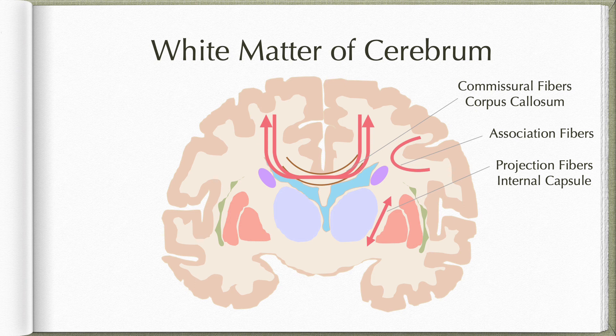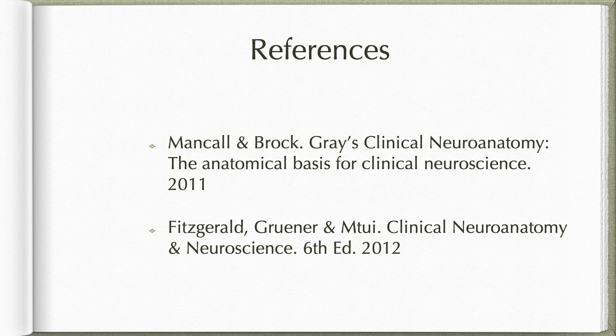Projection fibers include both corticofugal and corticopetal fibers, that is all fibers leaving or reaching the cortex. The largest such fiber bundle is the internal capsule, located between the thalamus and the lentiform nucleus. All fibers reaching or leaving the cerebral cortex to other lower centers pass through this structure.